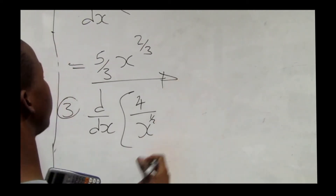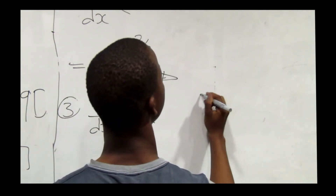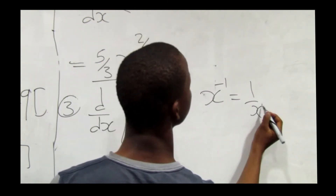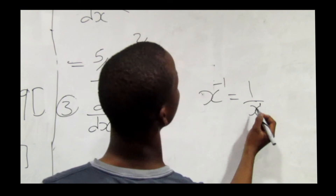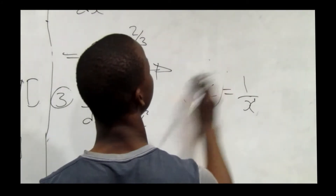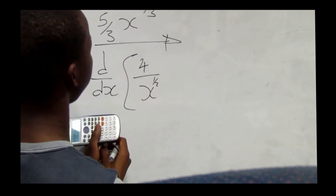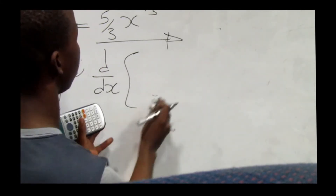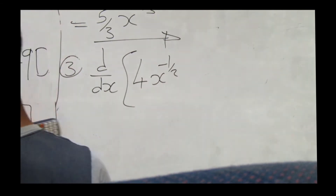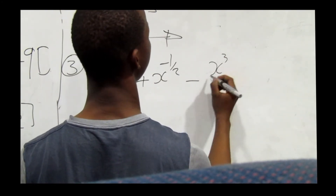We also use the rule that x to the power negative 1 equals 1 over x. When we move a base from the denominator, its exponent becomes negative. Applying this, 4√x rewritten becomes 4x to the power negative one over two in preparation for differentiation. We also have negative x³ over 9.